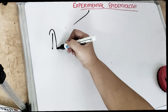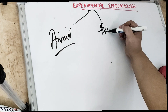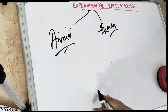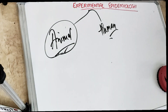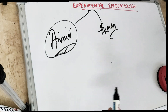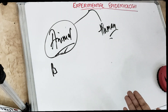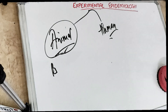Before experimenting on human beings, before the human trials, we have animal trials. Any drug or vaccine is tested on animals first. Why? Because animals are easy to breed, they can be manipulated easily, and they can multiply rapidly. If we had to wait for reproduction and multiplication of humans, we would have to wait for a long period of time.